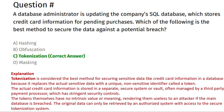Tokenization is considered the best method for securing sensitive data like credit card information in a database because it replaces the actual sensitive data with a unique non-sensitive identifier called a token. The actual credit card information is stored in a separate secure system or vault, often managed by a third-party payment processor with stringent security controls. The tokens themselves have no intrinsic value, rendering them useless to an attacker if the main database is breached.